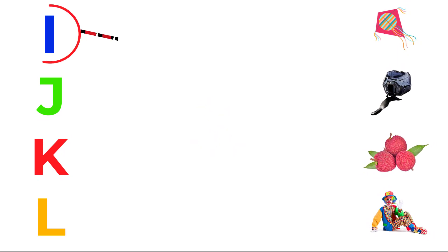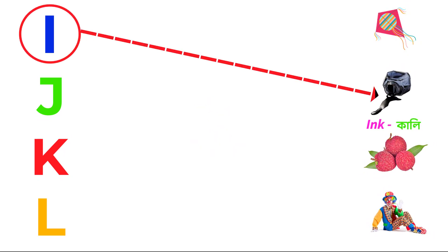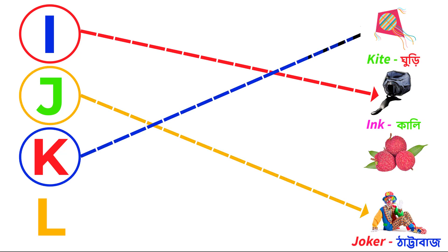I for ink, J for joker, K for kite, L for lichy.